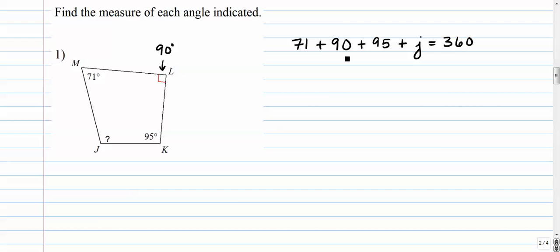So let's see, I've got 185, 185 plus 71, that's 256, I suppose, plus angle J is equal to 360. So we subtract and we get angle J is equal to 104 degrees. So the measure of angle J is 104 degrees.